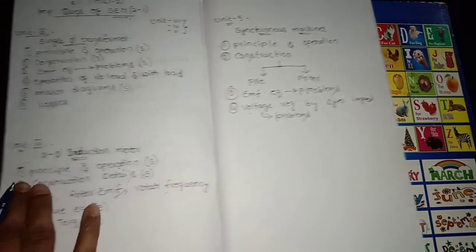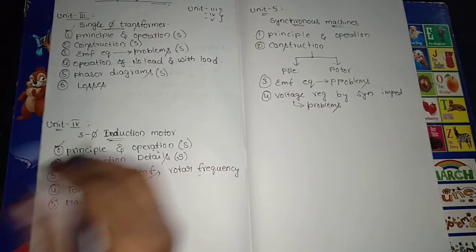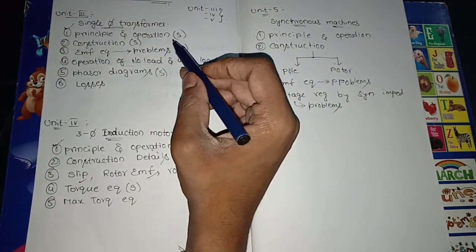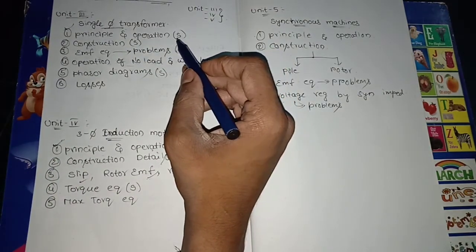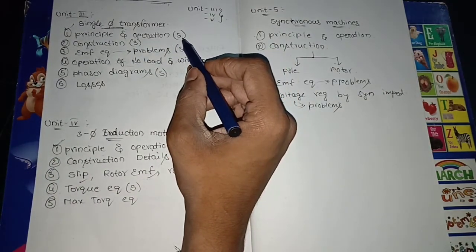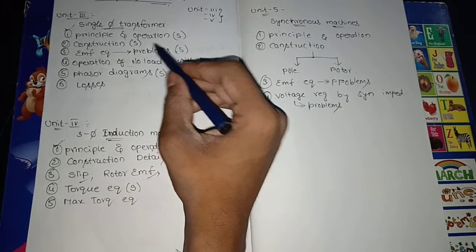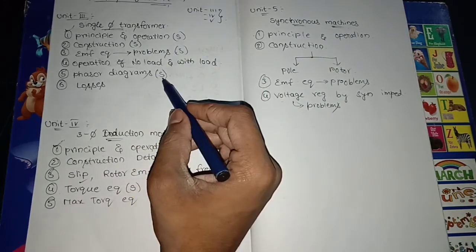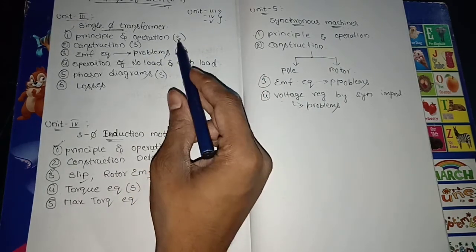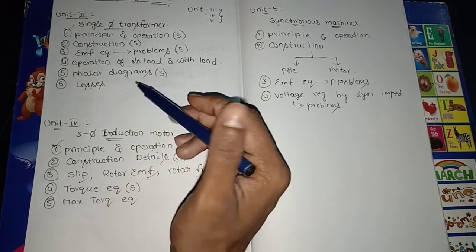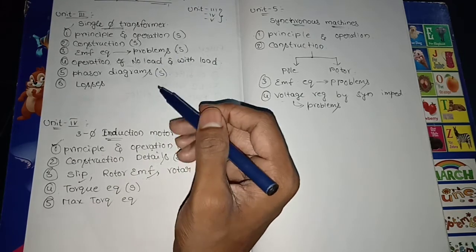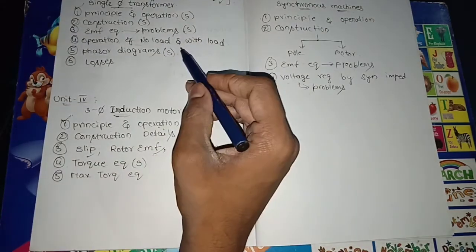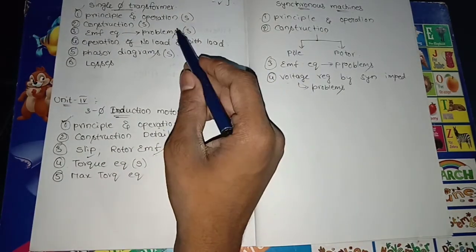To summarize briefly, the most important questions for the semester examination in Unit 5 are: principle and operation, construction, EMF equation, and phasor diagrams. These 4 are the most important for semester examinations, and you should also go through the related problems.